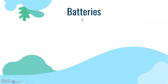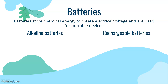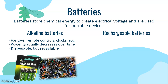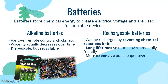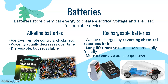Before we finish, let's cover energy storage. Batteries store chemical energy to create electrical voltage and are used for portable devices. We have two main types: alkaline and rechargeable. Alkaline batteries — the ones used in toys and remote controls — gradually decrease in power until disposed of, though they are recyclable. Rechargeable lithium-ion batteries can be recharged by reversing the chemical reactions inside, have long lifetimes, and are more environmentally friendly, including in electric cars and buses.